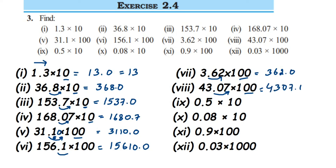Next question: 0.5 multiplied by 10. The decimal will move towards the right side after one digit, so it becomes 5.0, or just 5. The next one: similarly, the decimal point moves one digit to the right, giving 0.8. Then we have multiplication by 100 — we have only one digit, nine, but we want two digits, so after nine we put zero, giving 90.0.